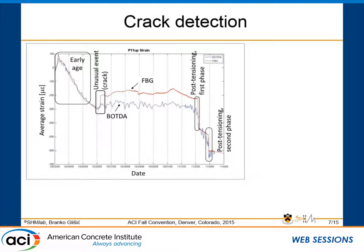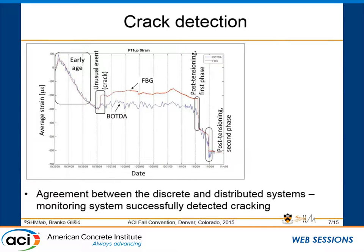Starting with results from during construction: a typical diagram shows the swelling of the concrete due to hydration, then contraction due to cooling down. We then detected unusual behavior — cracking in the deck — that happened at four locations in total. Both systems were able to detect it with different accuracy: FBG had better accuracy than the BOTDA as mentioned. When post-tensioning was applied to the bridge, both systems started to measure the same value again, giving comparable results and confirming that we detected something real.